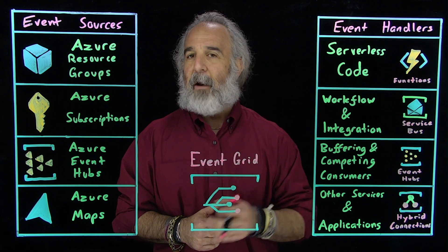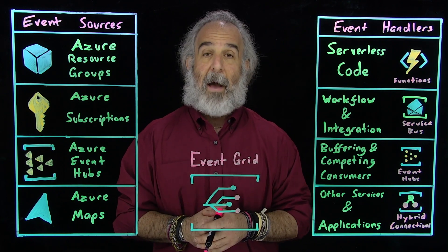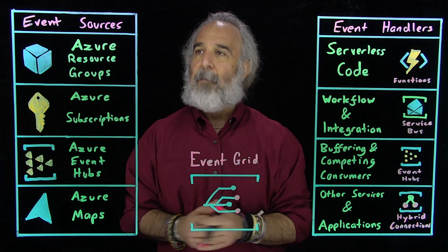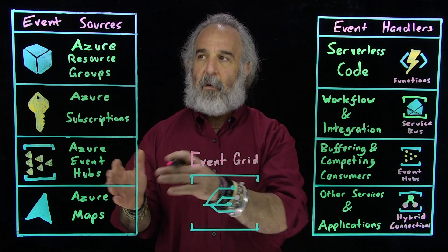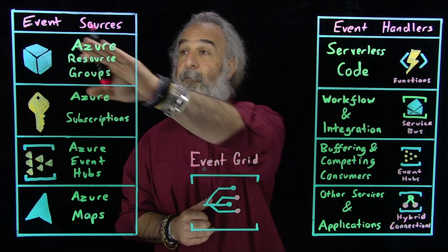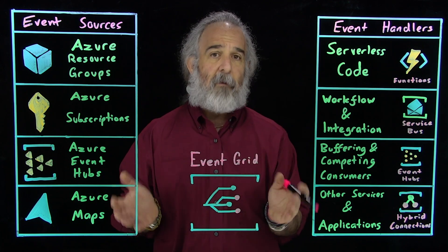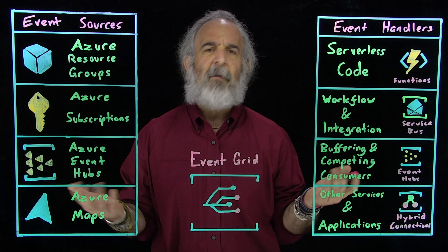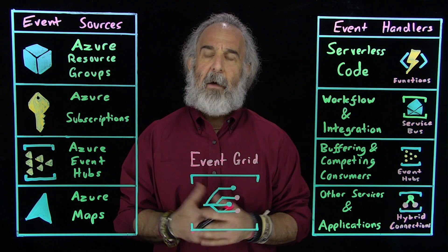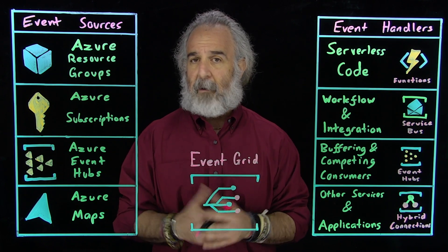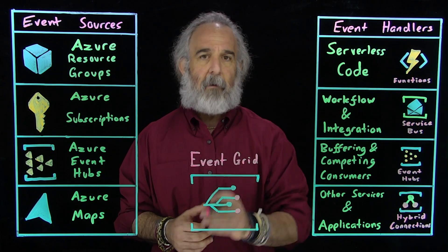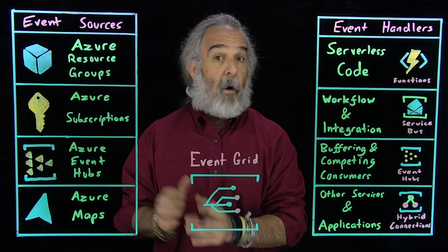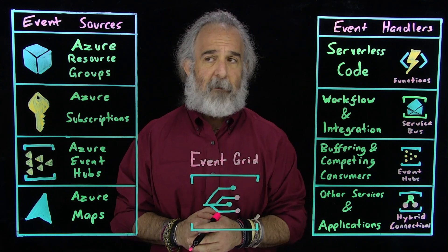Let's jump right in and start talking about what Event Grid actually is. On the left-hand side of the lightboard over here, you see that I've documented and drawn out a column labeled Event Sources. Event Sources represents all the different events — things that happen that we want to be able to understand and work with using Event Grid. Event Sources are the things that actually create those events.